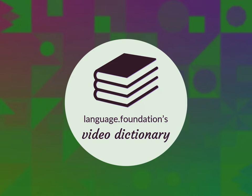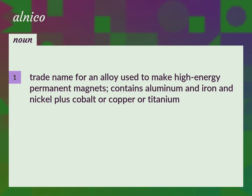Language.Foundation's Video Dictionary, helping you achieve understanding. Trade name for an alloy used to make high-energy permanent magnets. Contains aluminum and iron and nickel plus cobalt or copper or titanium.